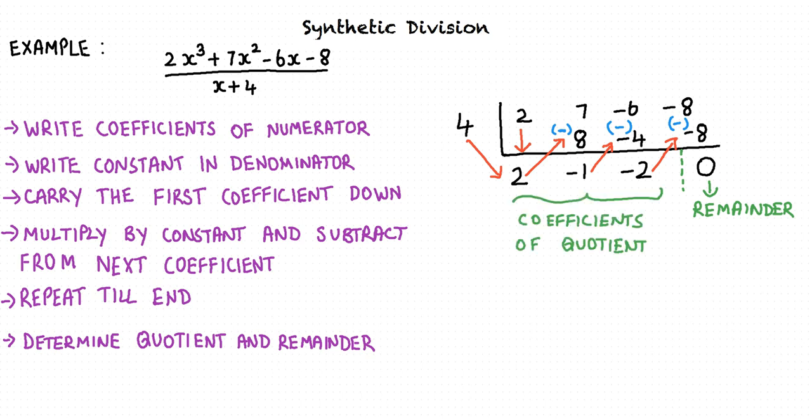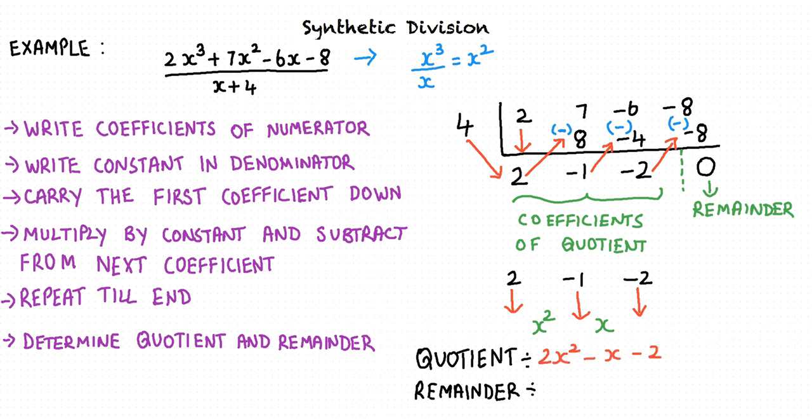The other three numbers are coefficients of the quotient. The first term in the numerator is of the order x³ and the denominator is of the order x. Thus, the first term of the quotient will be of the order x³ over x, which is x². The coefficient of x² is 2, the coefficient of x is -1, and the constant is -2. Thus, the quotient is 2x² minus x minus 2 and the remainder is 0.